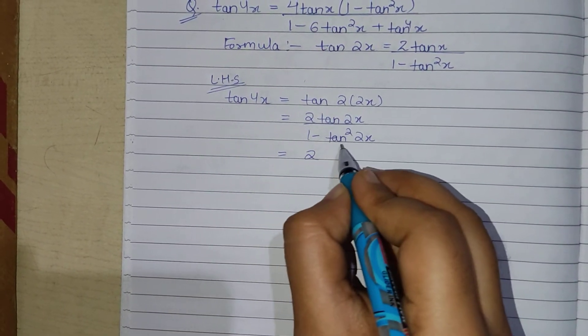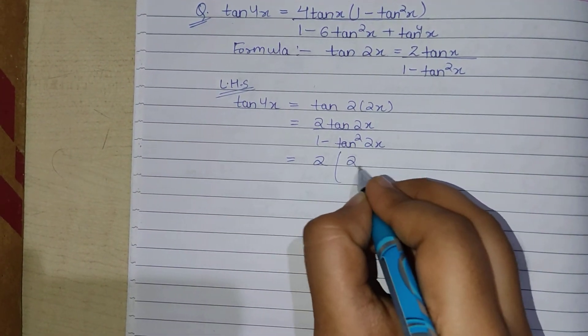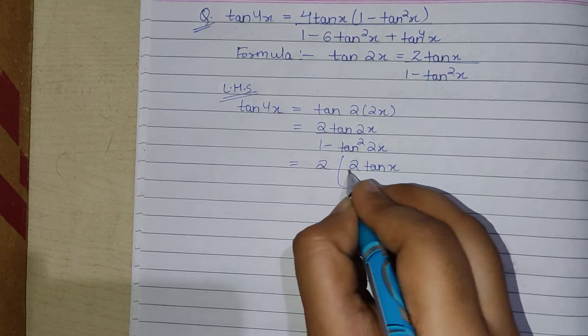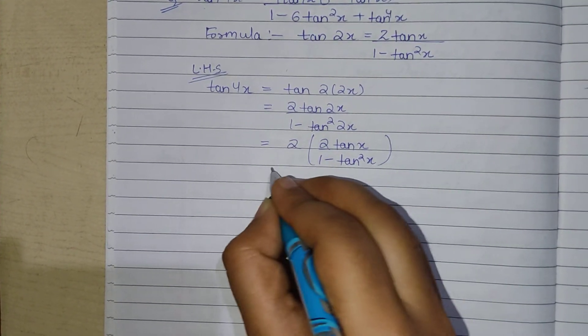We can write tan 2x and tan 2x like this equation: 2 into 2 tan x upon 1 minus tan square x whole square.